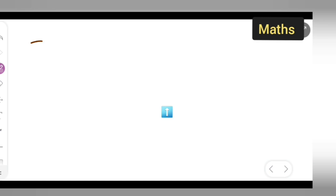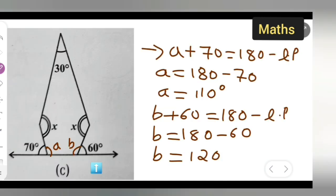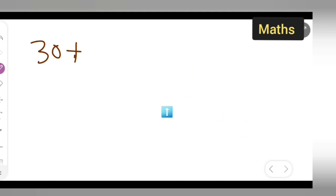So directly add 30 plus x plus x plus 120 plus 110, and this is equal to...